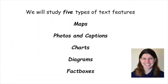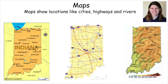Let's take a look at these five: maps, photos with captions, charts, diagrams, and fact boxes. Maps can show us many types of locations that may be mentioned in your readings. In these three different maps of Indiana, we see the locations of cities, major highways, and even natural features like hills and rivers. You can also see how near or far these places are from one another.